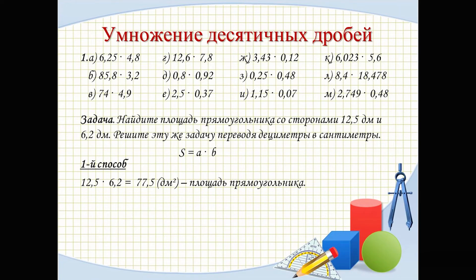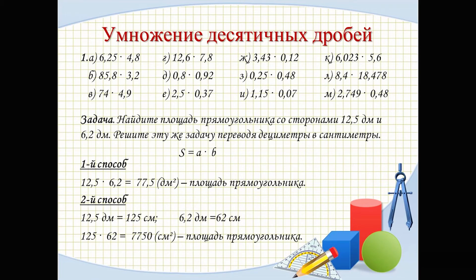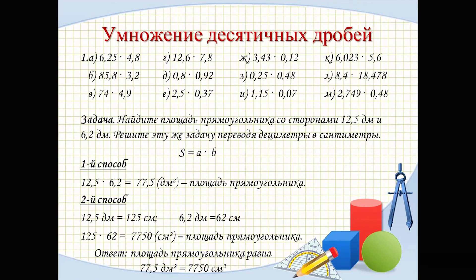Method 2: convert as stated in the problem — decimetres to centimetres. 12.5 dm = 125 cm, 6.2 dm = 62 cm. We multiply 125 × 62 and get 7750 square centimetres. Answer: the area of the rectangle is 77.5 square decimetres, which equals 7750 square centimetres.